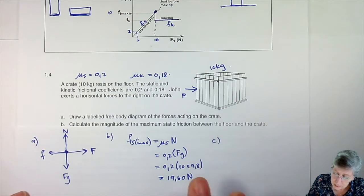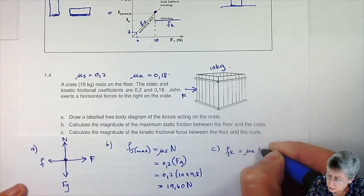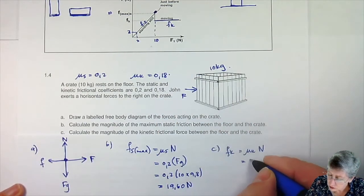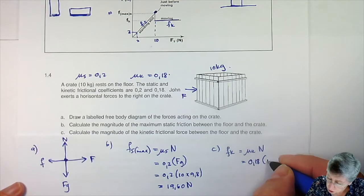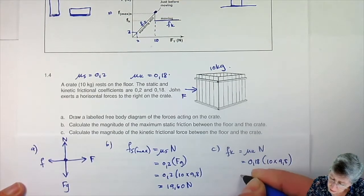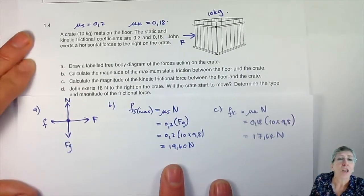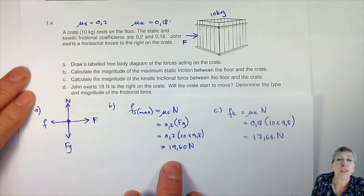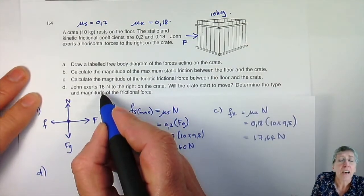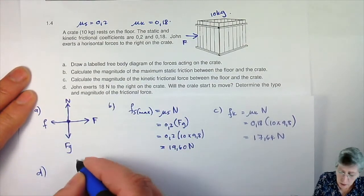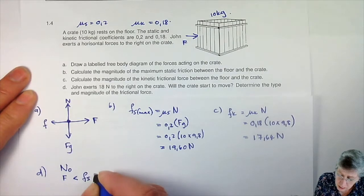Next, calculate the magnitude of the kinetic frictional force. We will have Fk equals mu k times N. Mu k is 0.18, and the normal force is once again equal to gravity, which is 10 times 9.8. That gives me 17.64 N. Number D: John exerts 18 N to the right on the crate - will the crate start to move? He is exerting 18, but this crate can resist with 19.6. So the answer is no, and the reason is that the applied force is smaller than the maximum static friction.